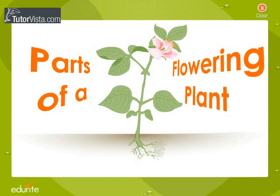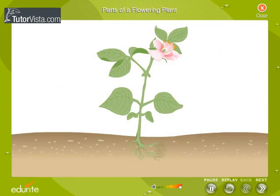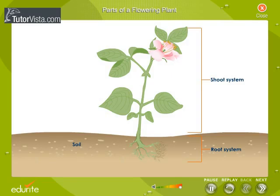Parts of a flowering plant. All flowering plants have two main systems: the root system and the shoot system. The root system grows mainly underground and the shoot system grows above the ground. Shown here is the shoot system and root system of a flowering plant.